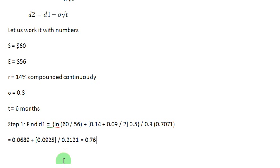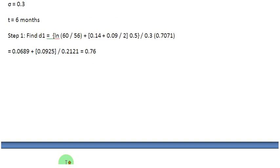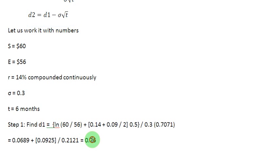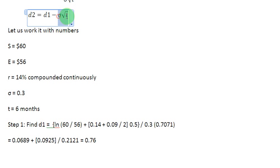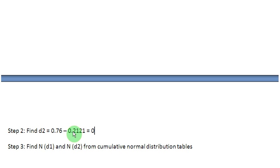Now we can go ahead and find out the value of D2, which is straightforward. The formula is D1 minus the product of the standard deviation and the square root of time. D1 is 0.76 and the product of standard deviation and square root of time is 0.2121, so D2 equals 0.76 minus 0.2121, which gives us 0.55.